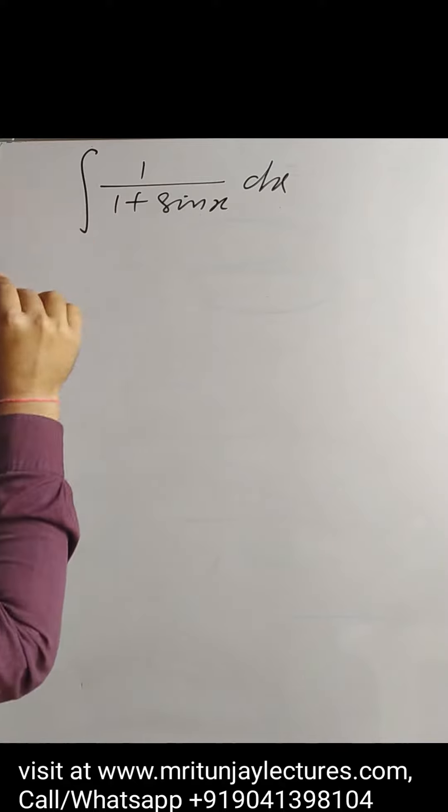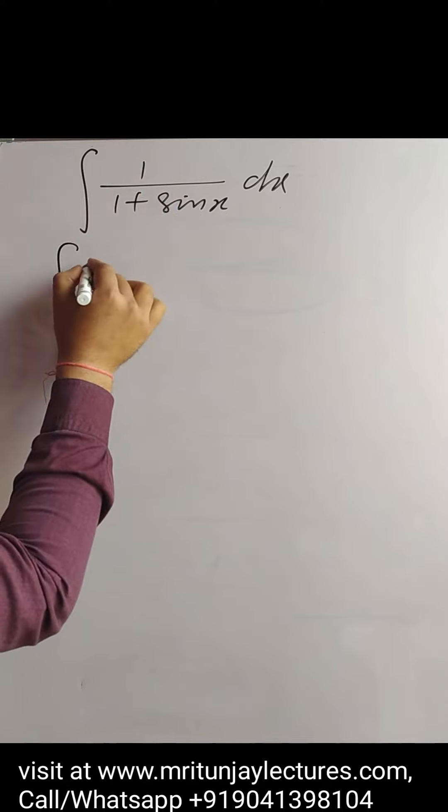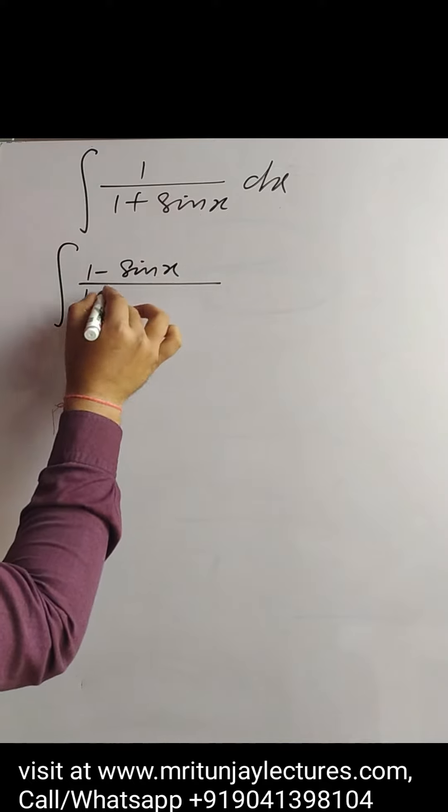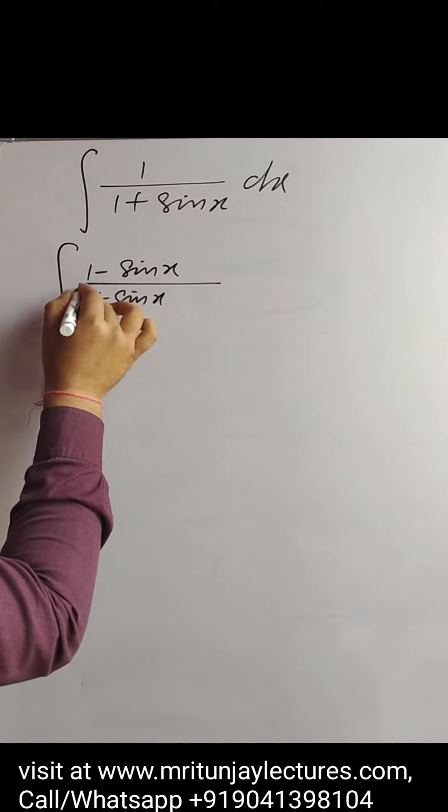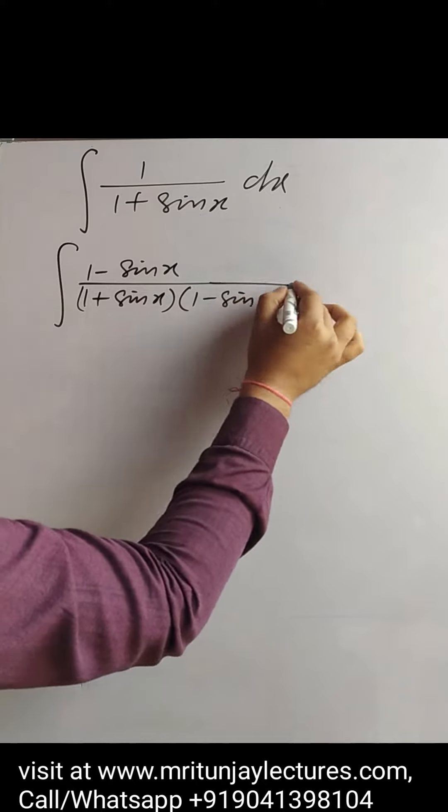If you see very carefully, multiply and divide by 1 minus sin x, then we get it written like that, 1 dx.